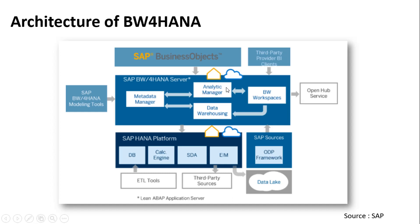In the BW for HANA server, we have a metadata manager which handles the overall metadata of the system. The analytic manager is something new that has come with BW for HANA — it simplifies and optimizes the execution plan and chooses the best plan to process the data. Whenever any query gets fired, the analytic manager comes into picture and optimizes the query and execution plan to make it lean and efficient.